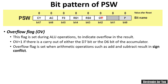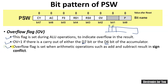The next flag is OV, the Overflow flag. This flag is set by the ALU during an arithmetic operation to indicate an overflow result. OV is set to 1 if there is a carry out of either the D7 bit or the D6 bit of the accumulator, which is an 8-bit register. If such a carry is generated, the overflow flag is set.